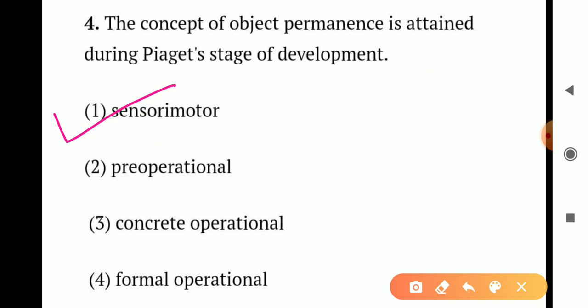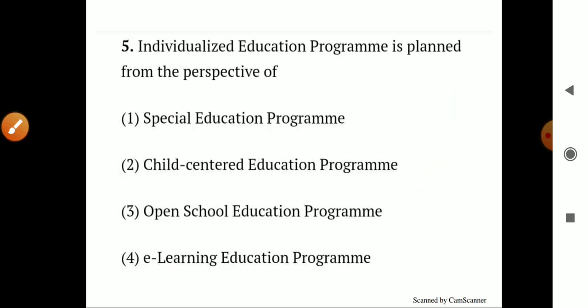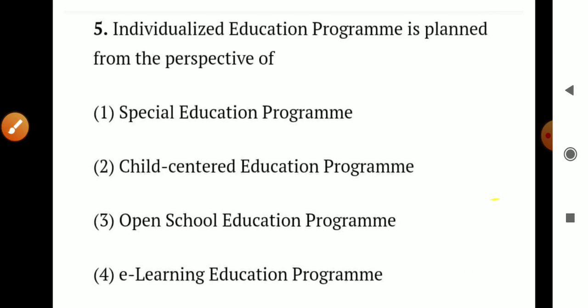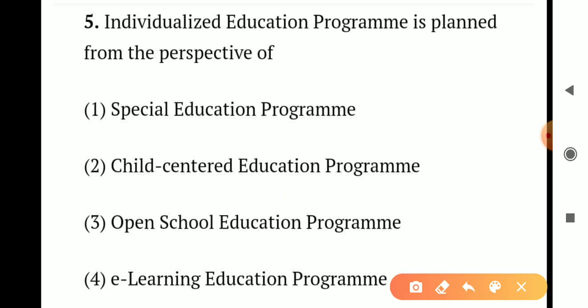Question number 5. Individualized education program is planned from the perspective of: Option 1 - a special education program. Option 2 - child-centered education program. Option 3 - open school education program. Option 4 - e-learning education program. Individualized education program is planned for a child-centered education program. So the correct answer is Option 2 - child-centered education program.